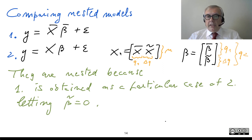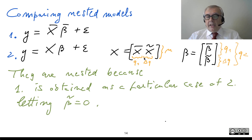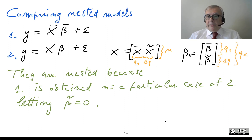So here we have X-bar, which is exactly the one in the first model, and then X-tilde. The number of rows is N, and the number of columns are Q1 (the columns in X-bar) plus delta-Q (the additional columns).